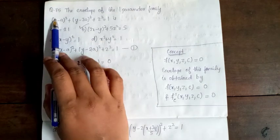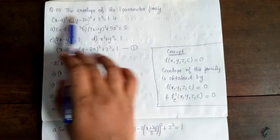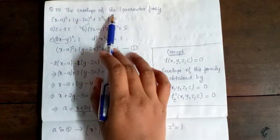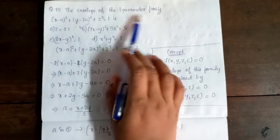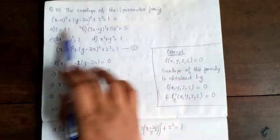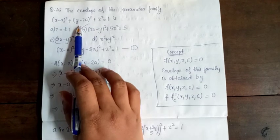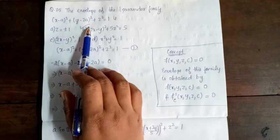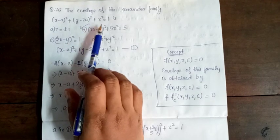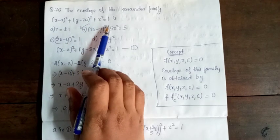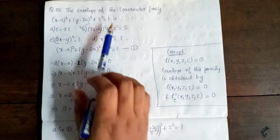Next, Question 75: Find the envelope of the one-parameter family (x − a)² + (y − 2a)² + z² = 1.